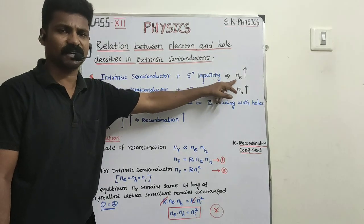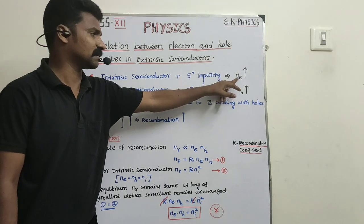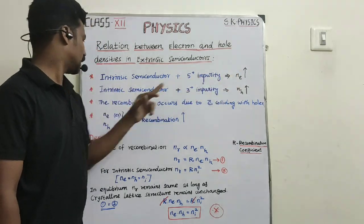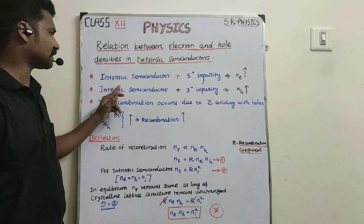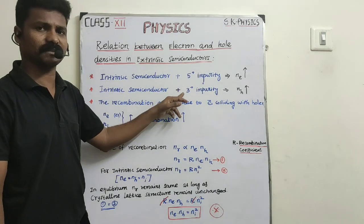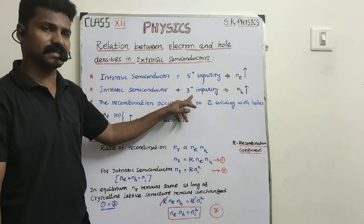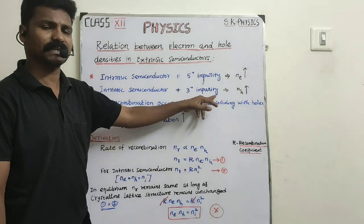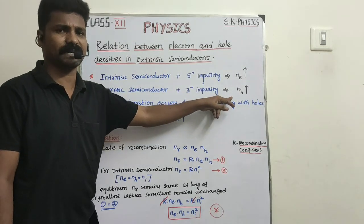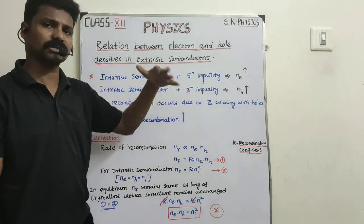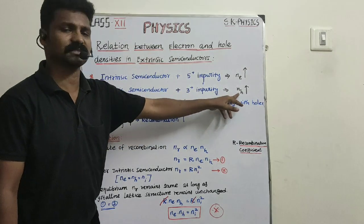In n-type semiconductor, the number of electrons will be more. That means the electron concentration is more. Similarly, if an intrinsic semiconductor is doped with trivalent material, we get p-type semiconductor. In p-type semiconductor, generally the number of holes will be more. That means holes concentration is more.